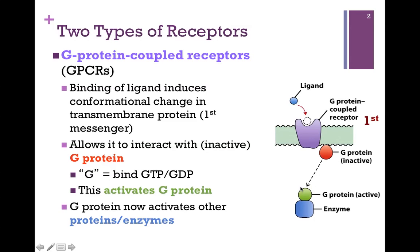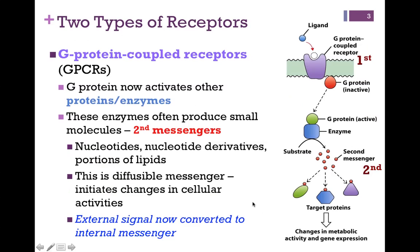Now our active G-protein can interact with another protein or enzyme and communicate that signal. Here we have our active G-protein in turn activating an enzyme, and that enzyme is going to create our second messenger. These are nucleotides, nucleotide derivatives, or sometimes portions of lipids. The important thing to remember is that these second messengers are always diffusible, because their role is to communicate that message and take it from the membrane to where it needs to go.